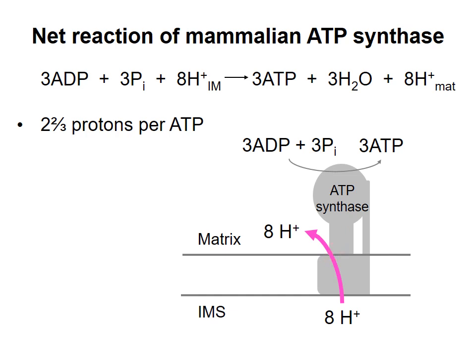In the next video, I'll calculate how many ATP can be made from each NADH or QH2 that gives electrons to the electron transport chain, which will allow us to figure out how many ATP can be made from complete oxidation of one glucose molecule.